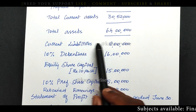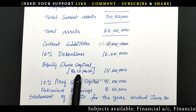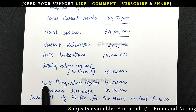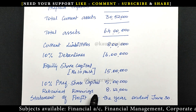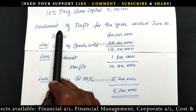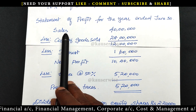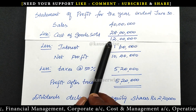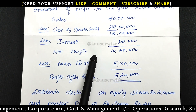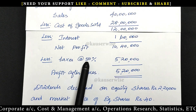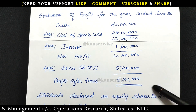Current liabilities, 10% debentures, equity share capital at rupees 10 per share, 10% preference share capital, and retained earnings. From the income statement — Statement of Profit for the year ended June 30th — sales minus cost of goods sold minus interest equals net profit. After subtracting taxes at 50%, you get profit after tax.